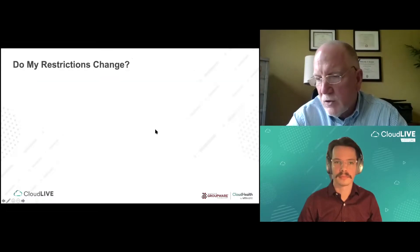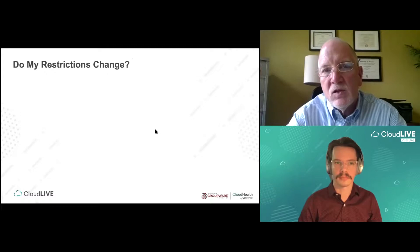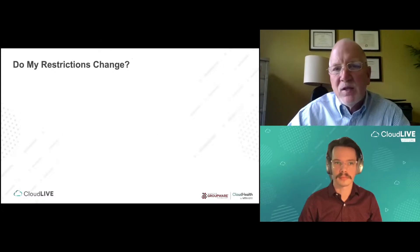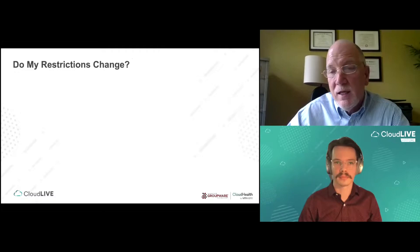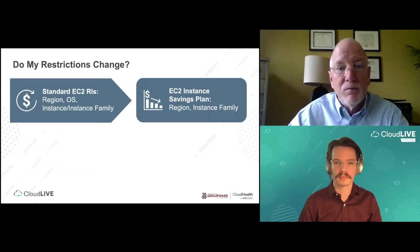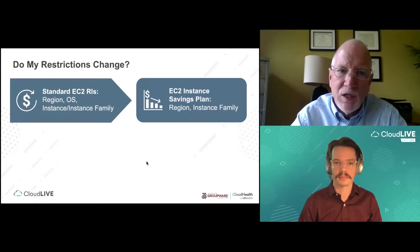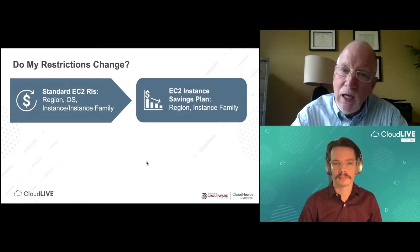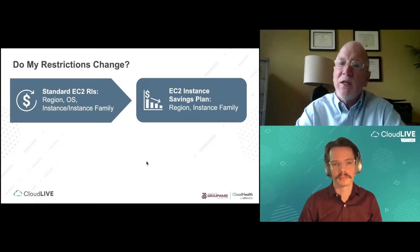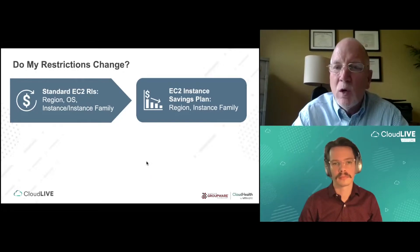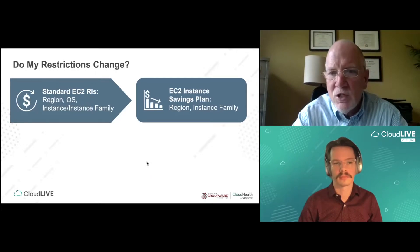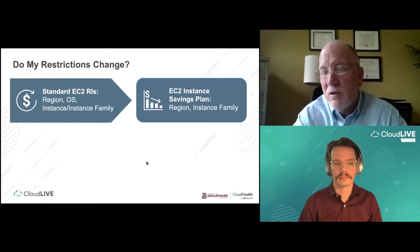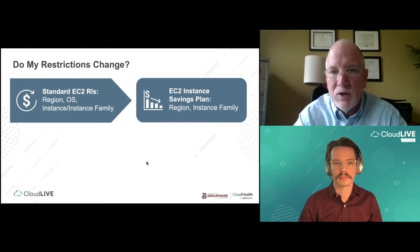The discount structure is equivalent to what you're used to, but on the restriction side it becomes much less restrictive. If you're used to standard EC2 RIs, you must buy them at the region, OS, and instance or instance family level. With the equivalent EC2 instance savings plan, you are only tied to the region and the instance family. So you can change instance types within the family and change OSes, giving you a lot more flexibility.